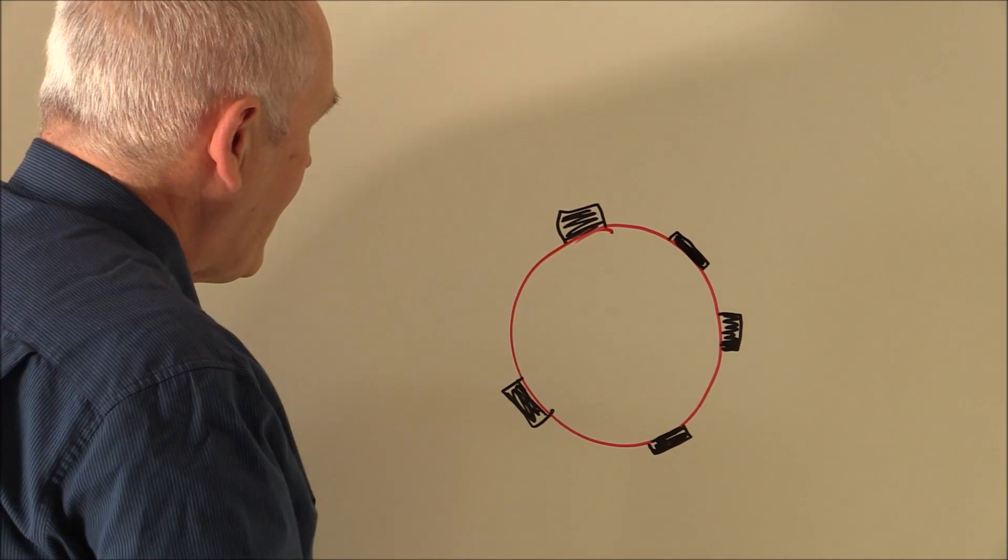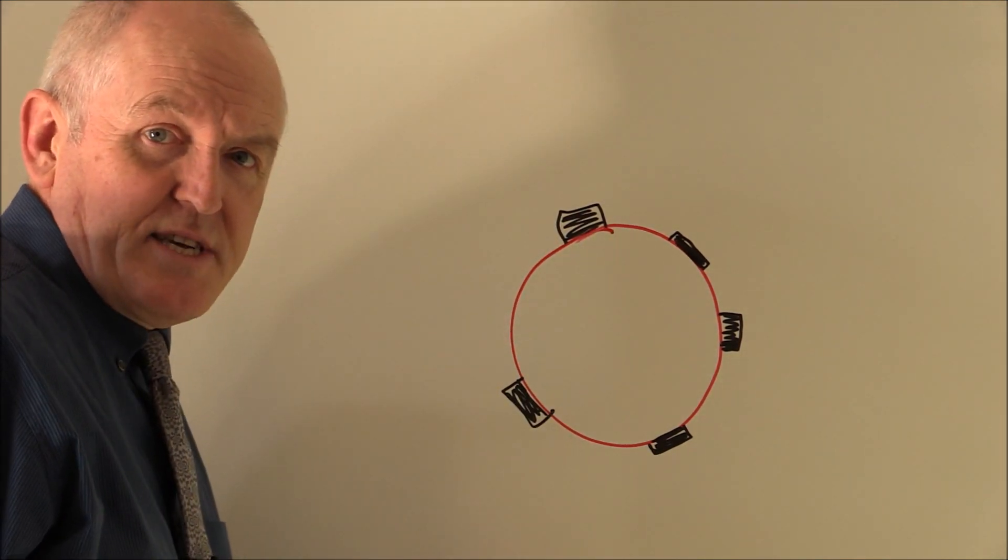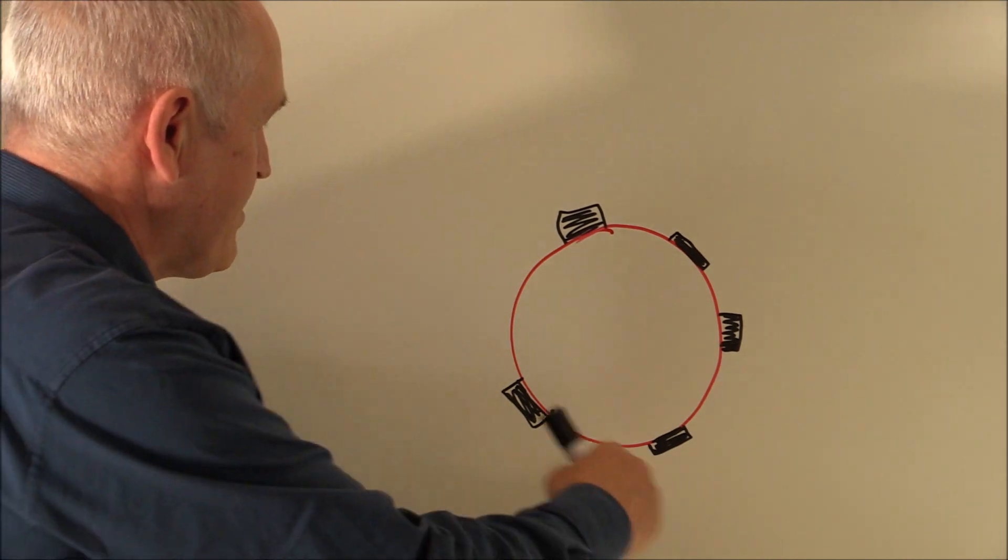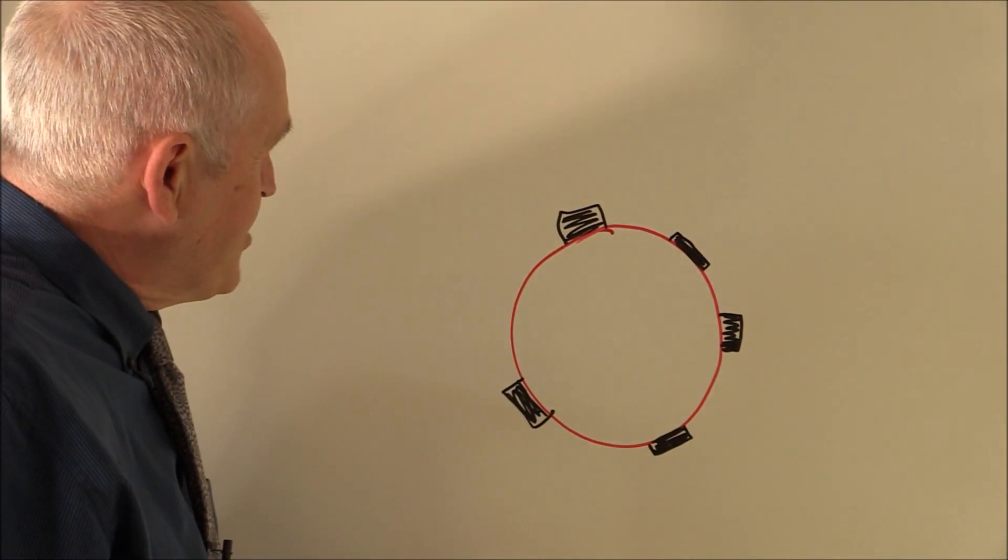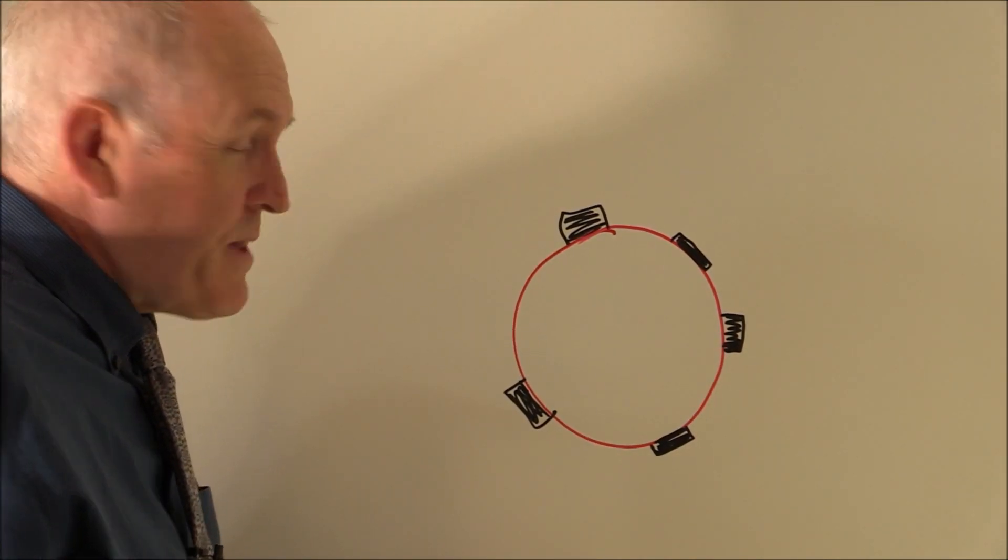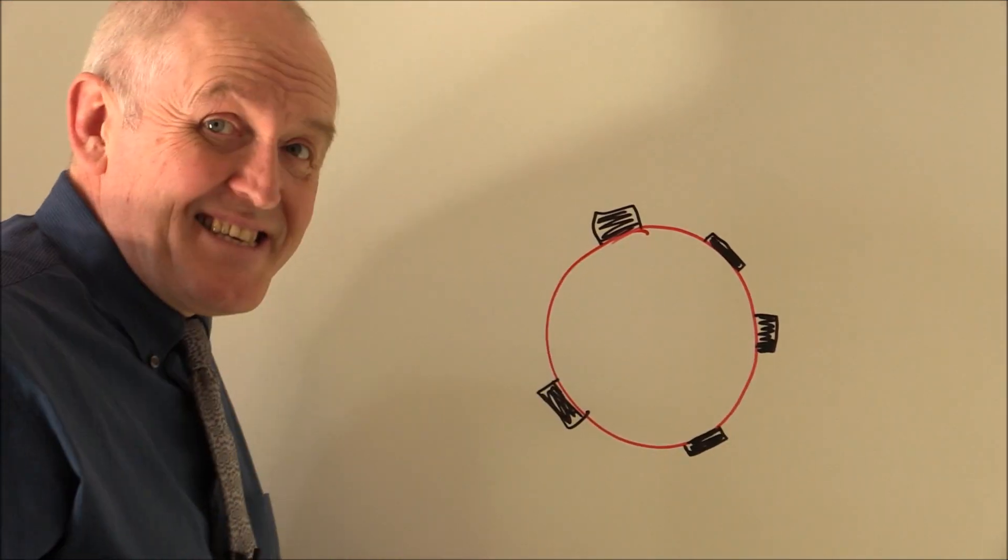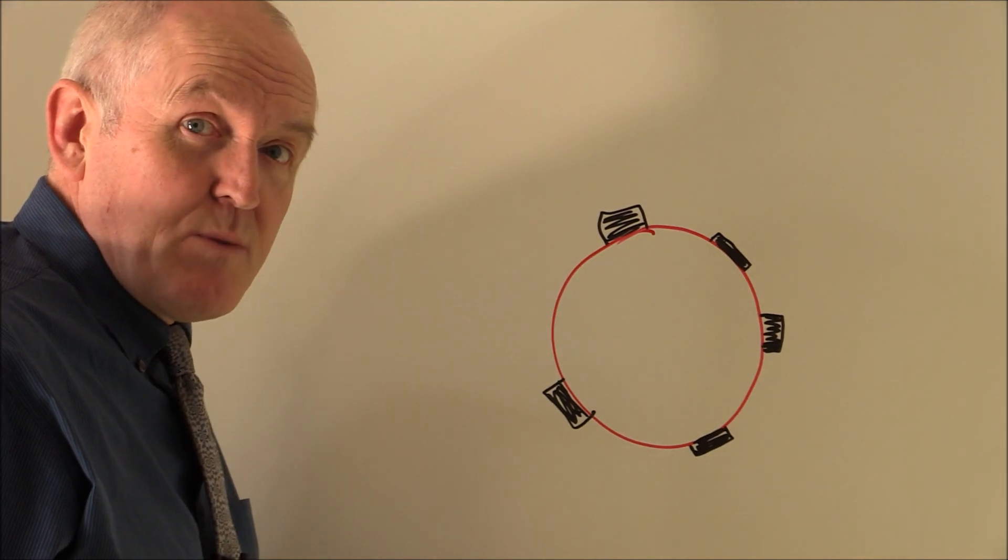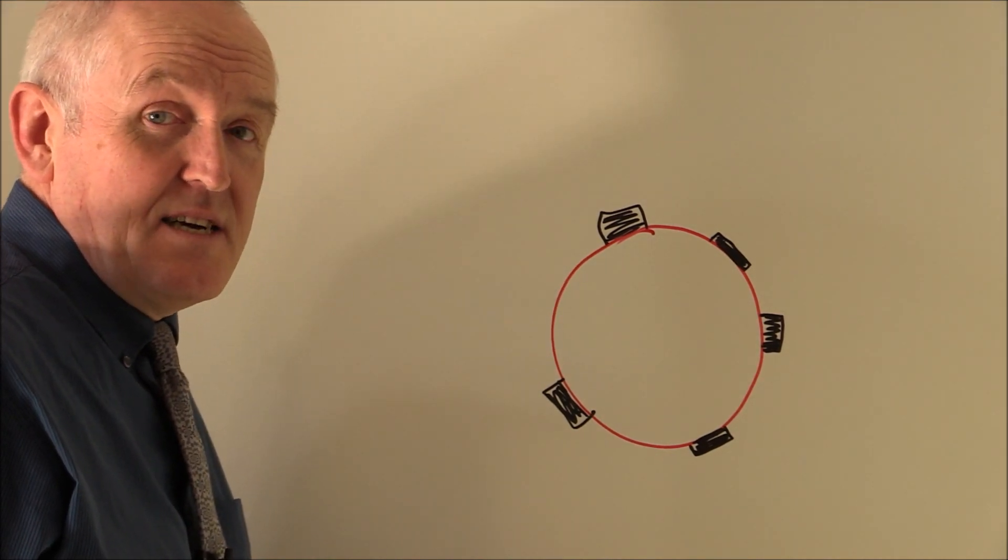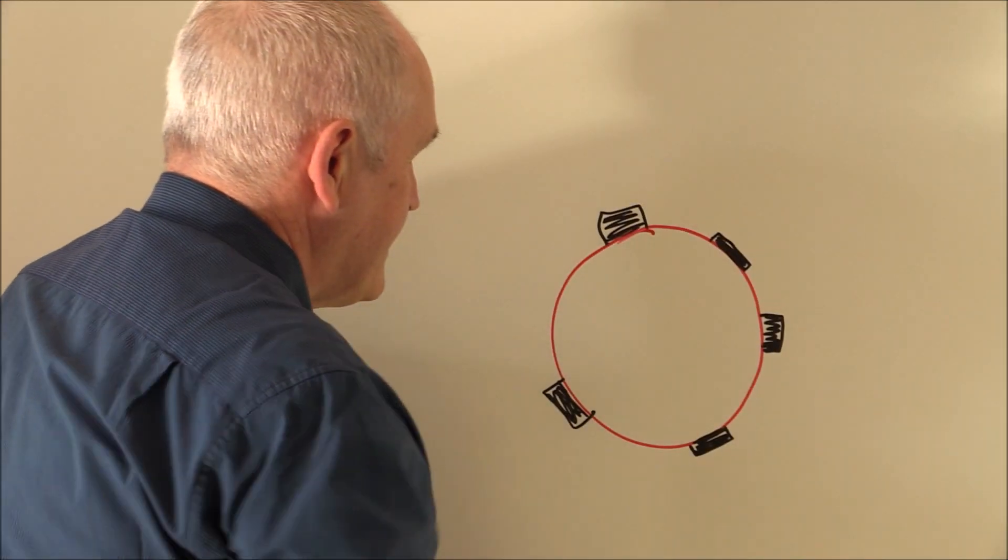Now it's actually quite complicated. There are many subgroupings to the Rhesus factor. The last time I checked, there was about 49 subgroupings. But the main one, the important one, the antigenic one that we need to know about is the D factor. So when we're talking about the Rhesus factor, we're really talking about the D factor.